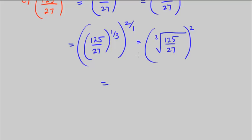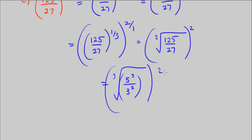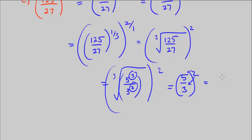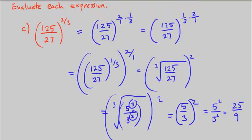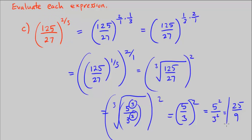What is the cube root of 125? Well, 125 is 5 times 5 times 5, or 5 cubed. And 27 is 3 times 3 times 3, or 3 cubed. The cube root cancels with those cubes, leaving 5 over 3, then squared. That gets distributed to both numerator and denominator: 5 squared over 3 squared, which is 25 over 9.